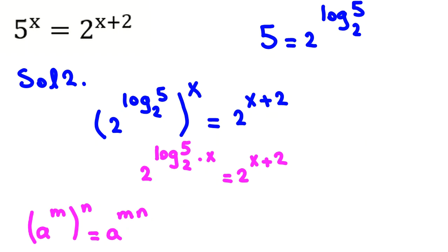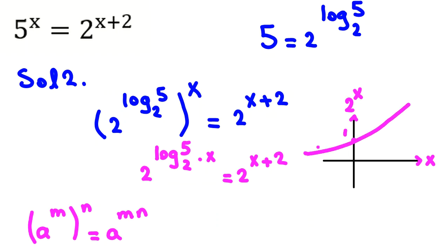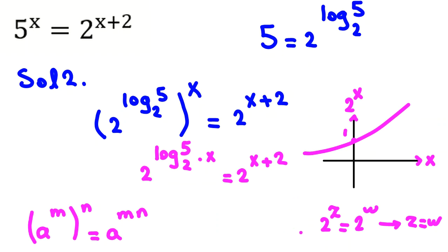Now, the function 2 to the power of something is strictly increasing. For example, the graph of 2 to the x passes through (0,1) and is strictly ascending. This means if 2 to the z equals 2 to the w, we can conclude z equals w. This is an important rule.